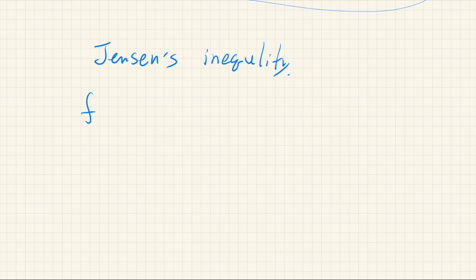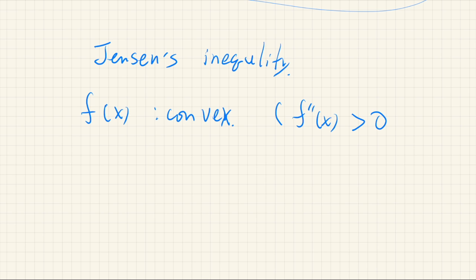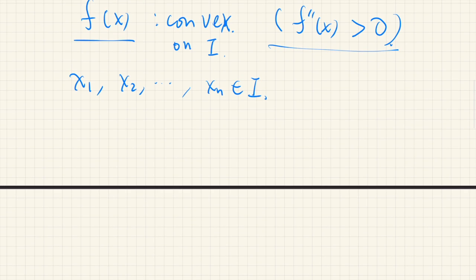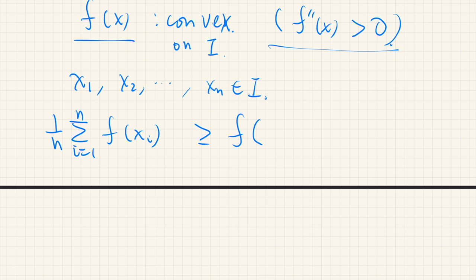Jensen's inequality states: if a function f is convex on some interval I — meaning its second derivative is always positive — and x1, x2, ..., xn are in that interval, then the arithmetic mean of the functional values is greater than or equal to the value of the function at the mean of the x's. That is, (1/n) · Σf(xi) ≥ f((1/n) · Σxi).